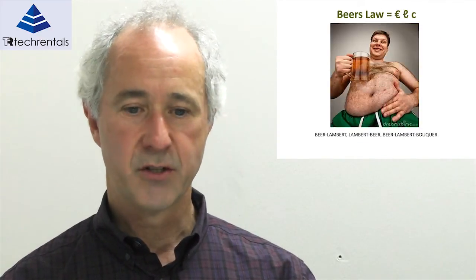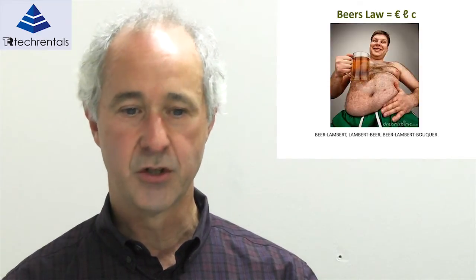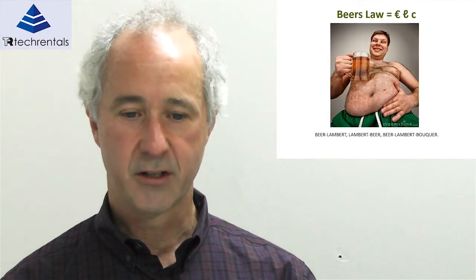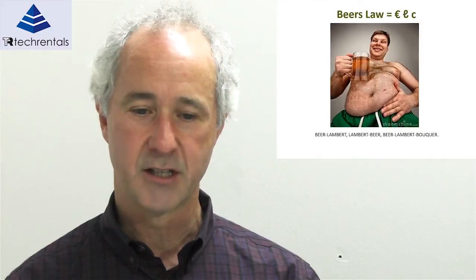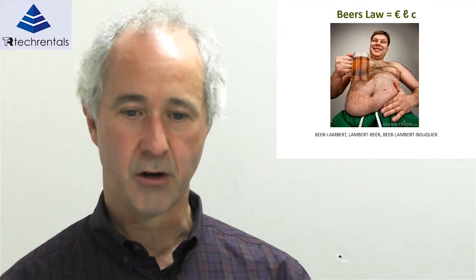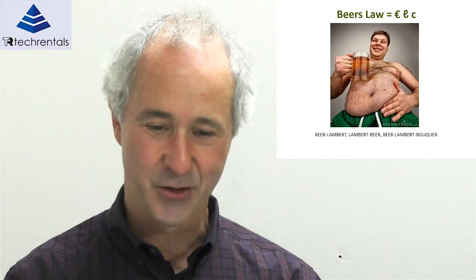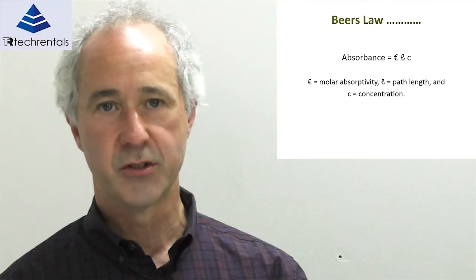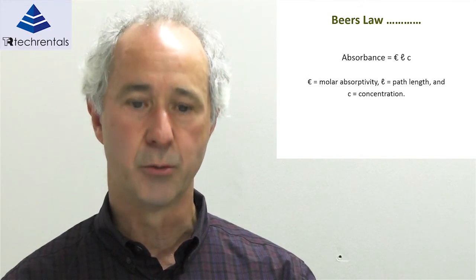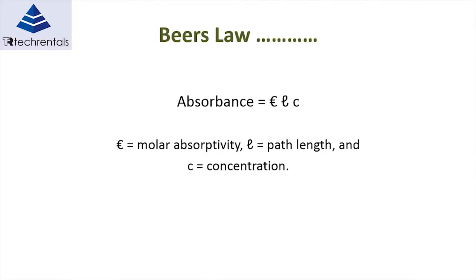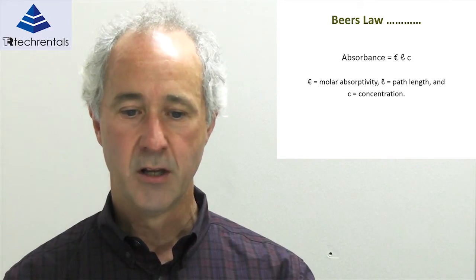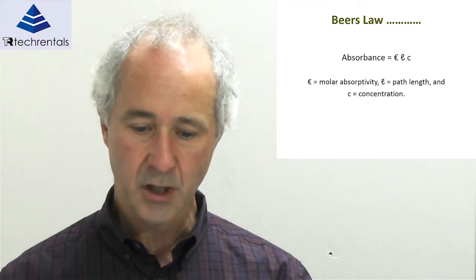How NIR spectroscopy can be used to analyse materials is determined by Beer's Law. Beer's Law states that the absorbance of light is determined by the molar absorptivity of the material, the path length, and the concentration of the material. In NIR spectroscopy, if we keep our path length constant and we're measuring the same material so molar absorptivity is also constant, then absorbance gives us a direct relationship to concentration — a very useful property.